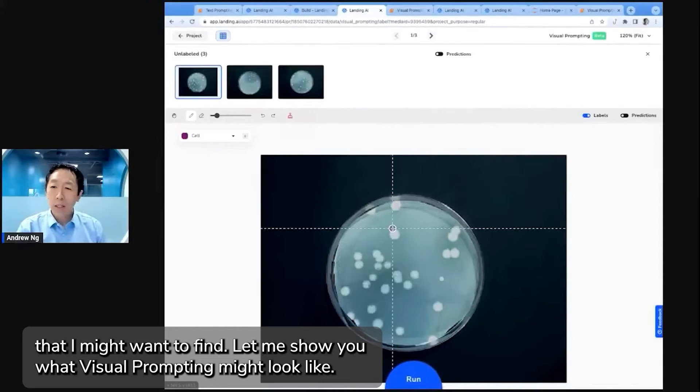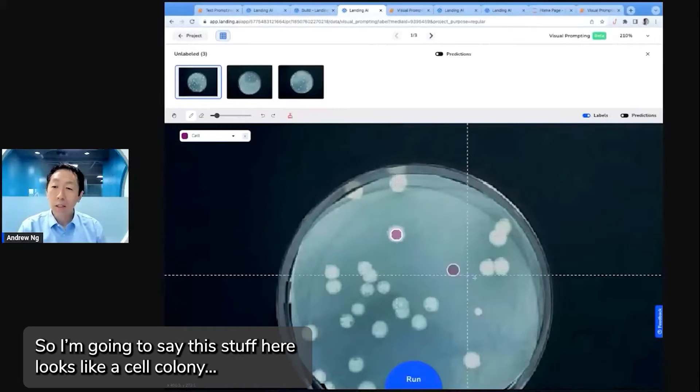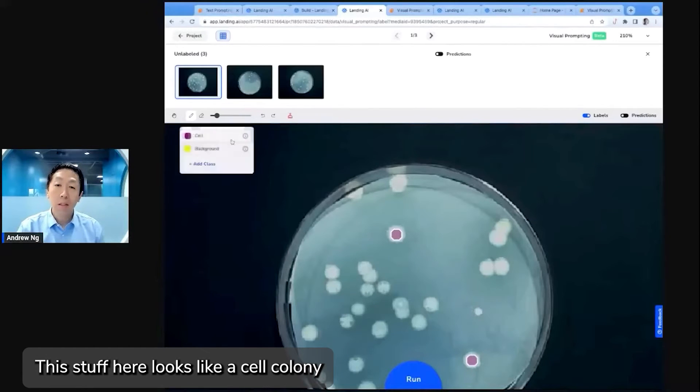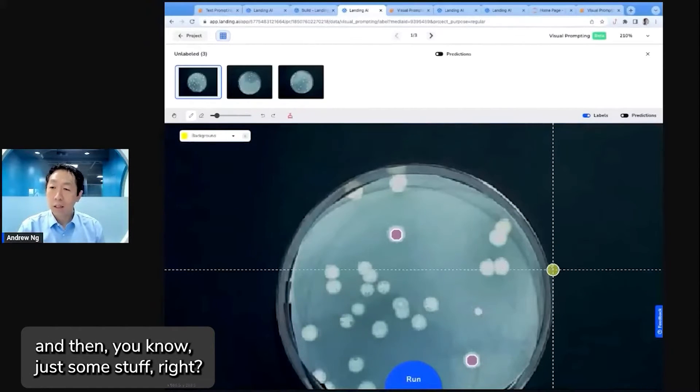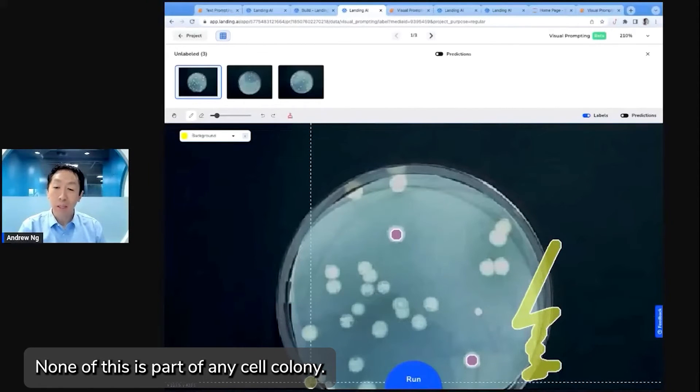Let me show you what visual prompting might look like. So I'm going to say this stuff here looks like a cell colony. Let me label this one as well. This stuff here looks like a cell colony. And then here's some stuff that looks like background. None of this is part of any cell colony.